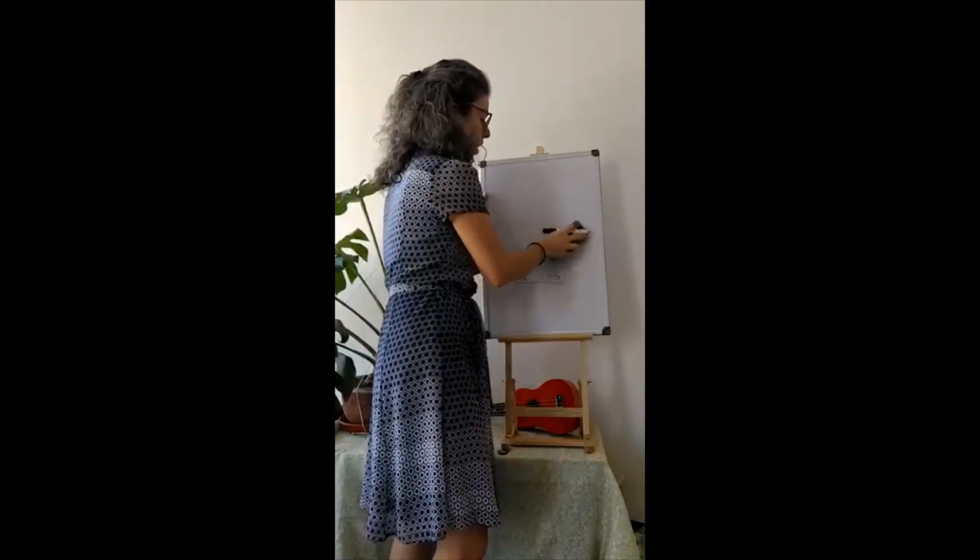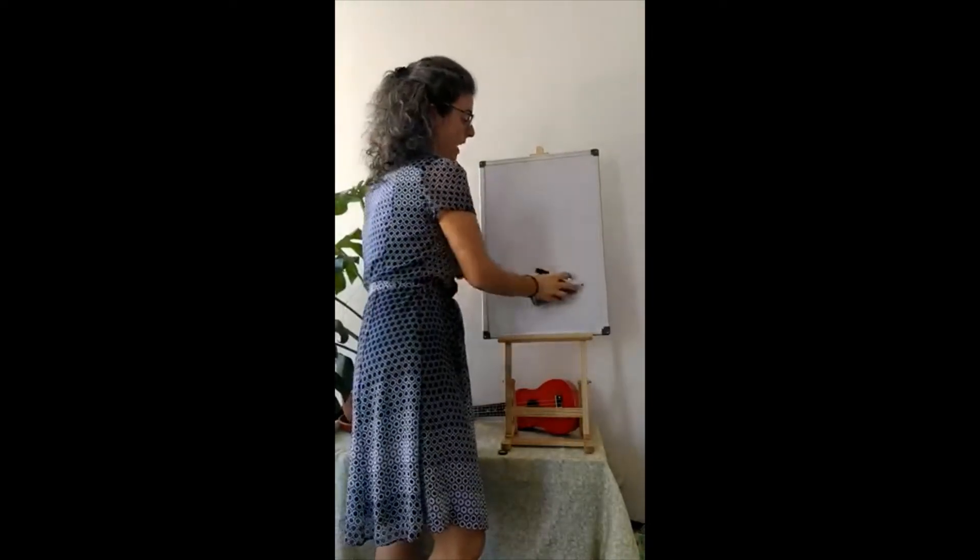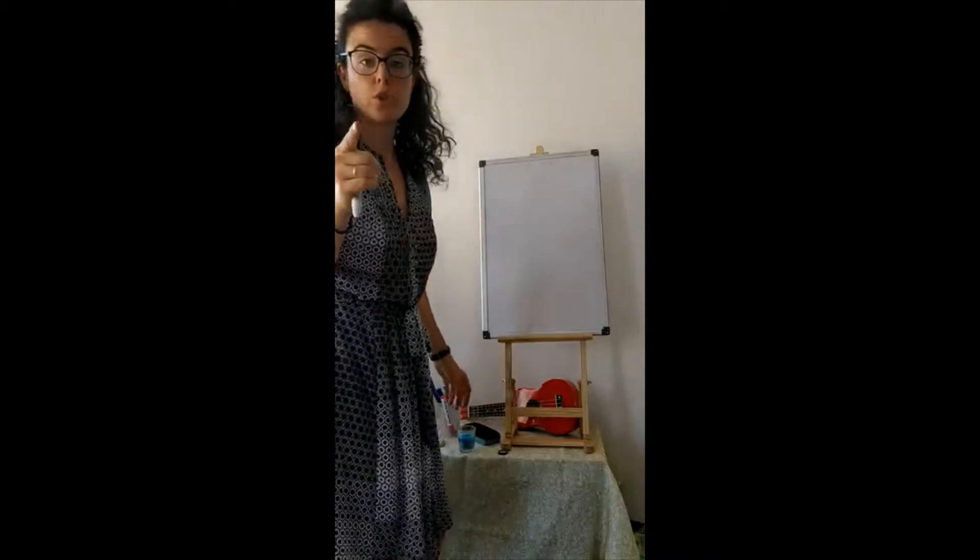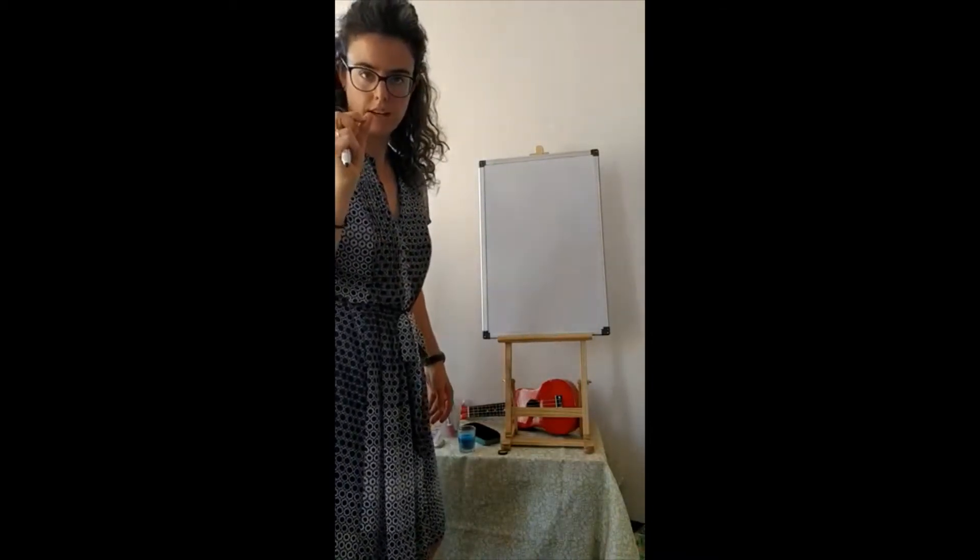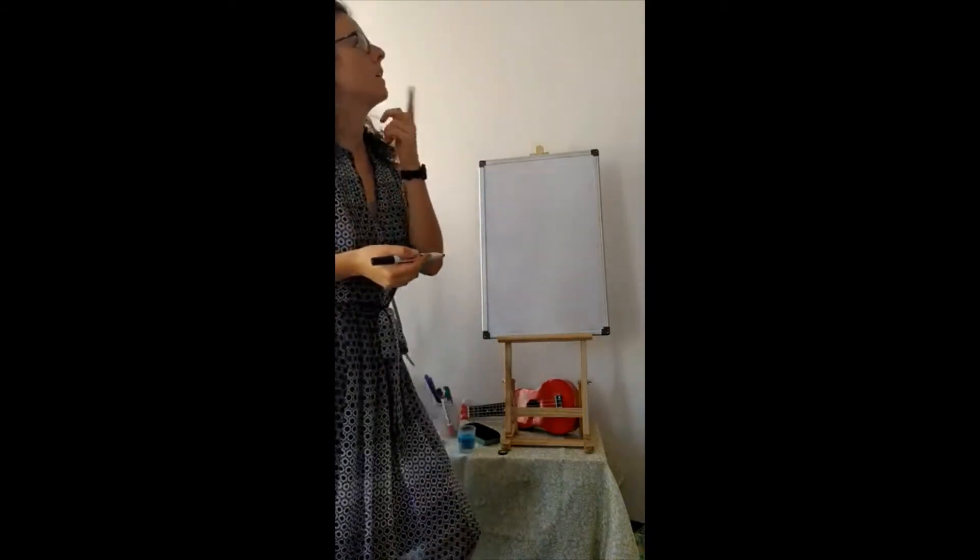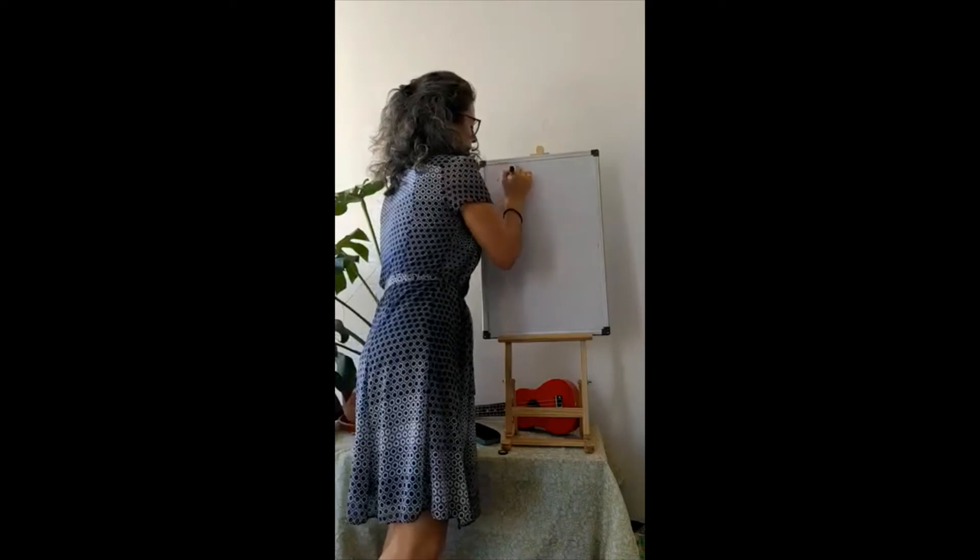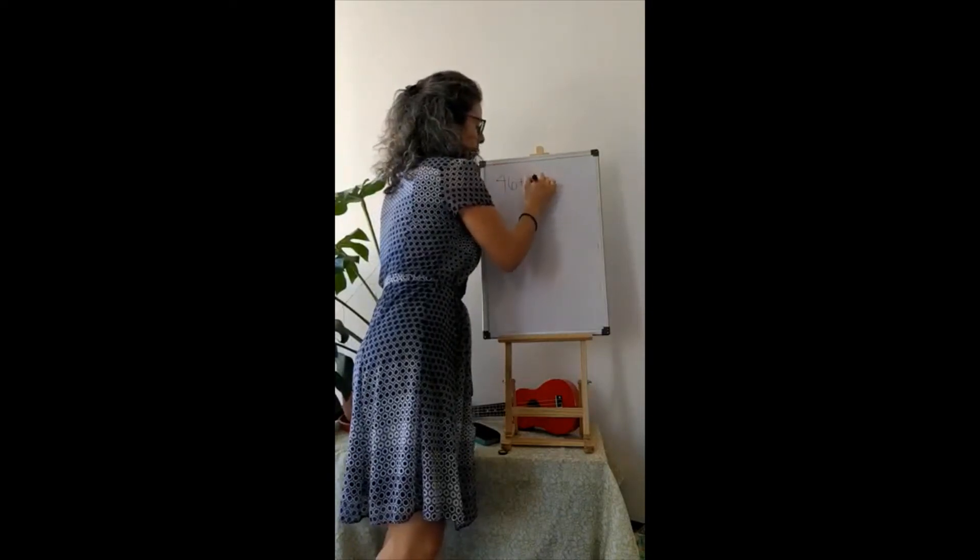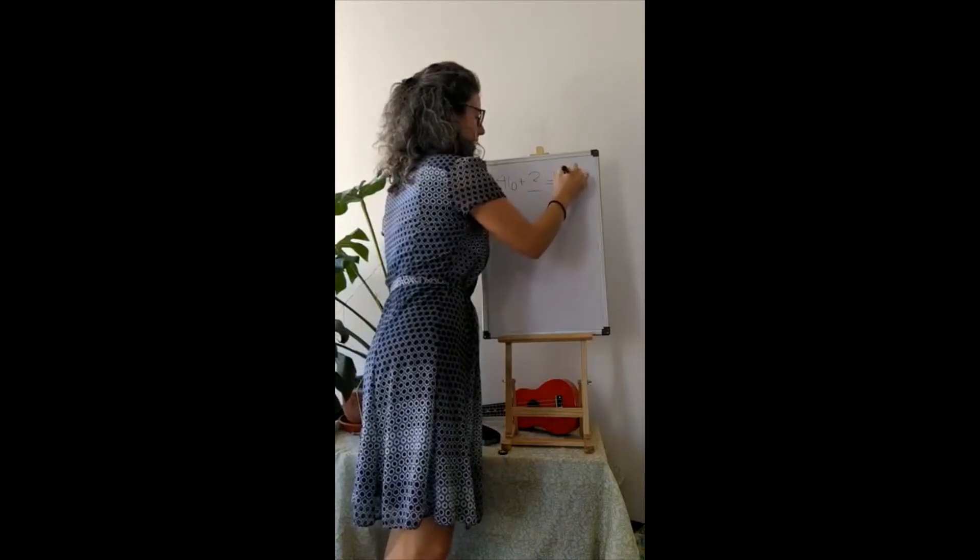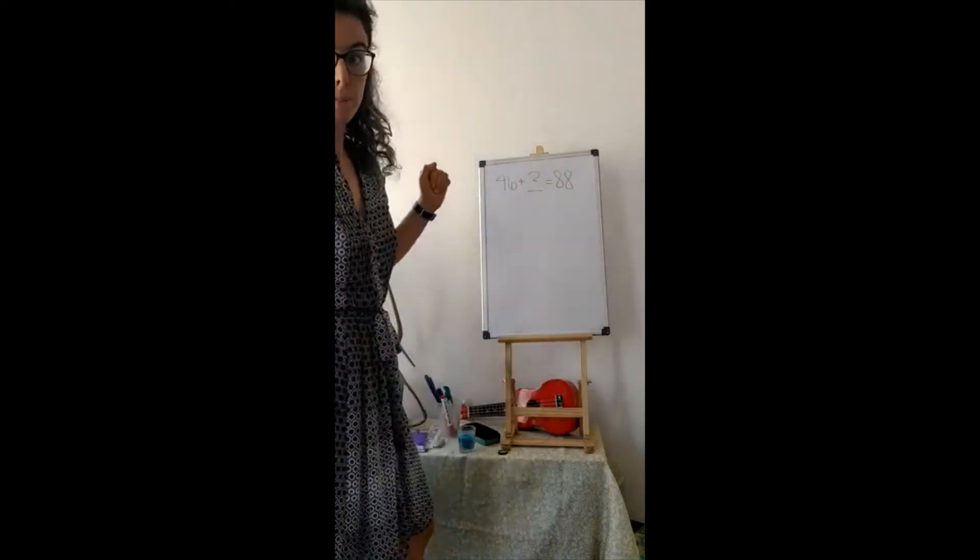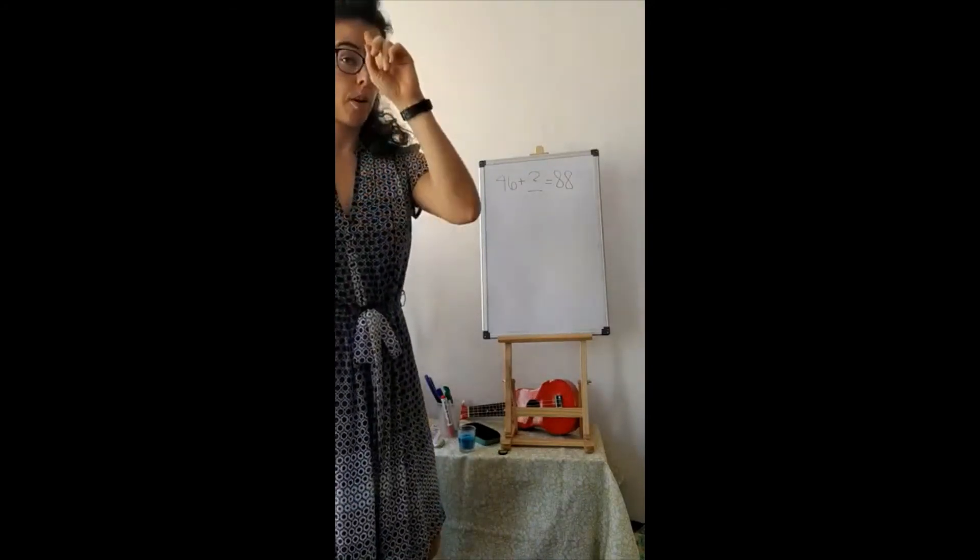This time, I want you to do it on your own, and then we will check it together. So right now, I will give you a number sentence. You do it alone, and then we check together. Got it? Yes. Okay, let's see. Let's do, alright. Forty-six plus what is equal to eighty-eight. Ooh, Miss G is throwing some big numbers in there. But it's okay. You guys got this. Just remember what we did.